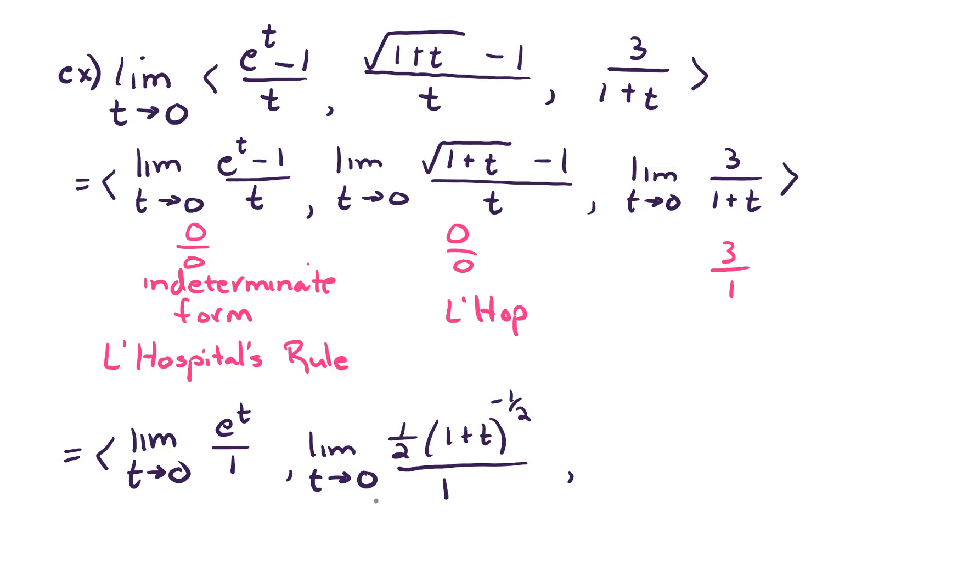For our second component, we need the limit as t goes to 0 of the derivative of the numerator, which is 1 half times 1 plus t to the negative 1 half over 1. And the third component, we already did that limit and found it was just 3.